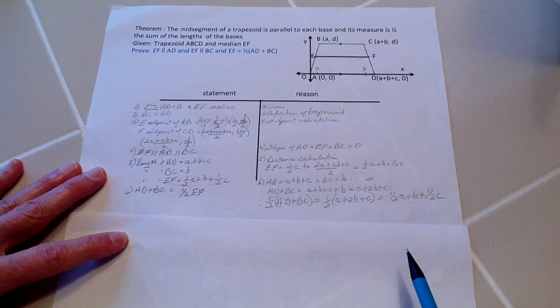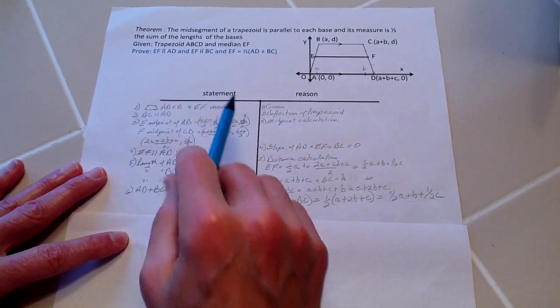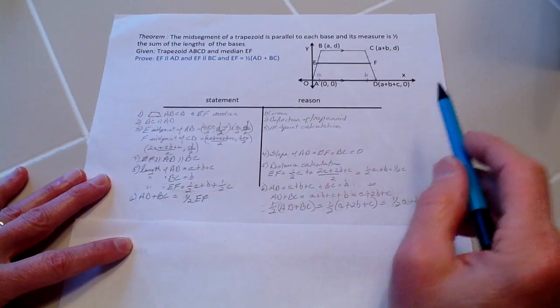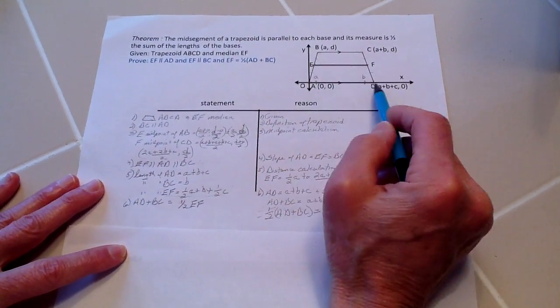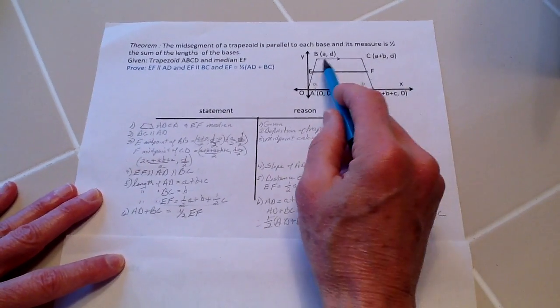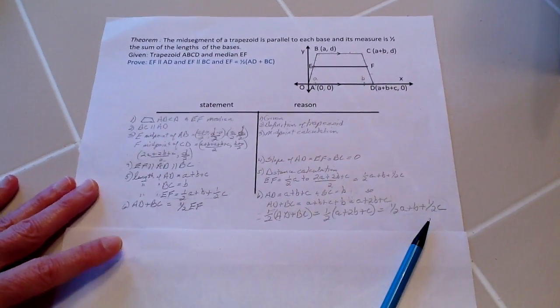Therefore, our reason is valid. Okay, so we have just proven then that the midsegment, this midsegment right here of a trapezoid, is parallel to both the bases, and it's one-half of the measure of the sum of these bases. Thank you.